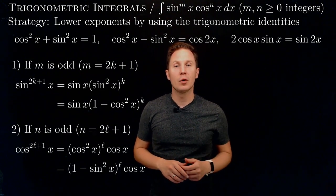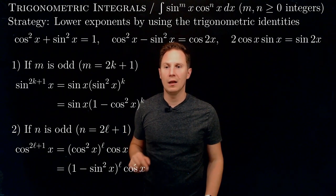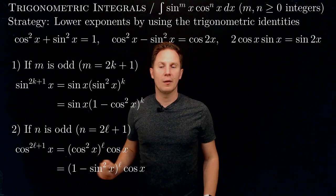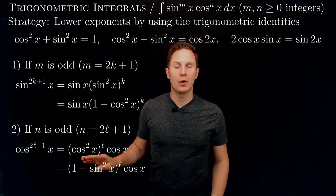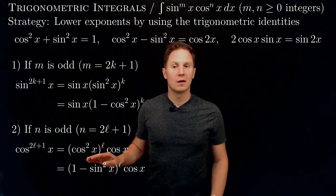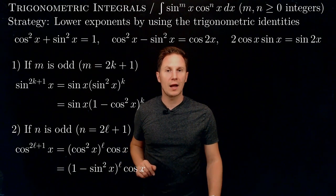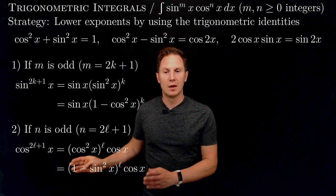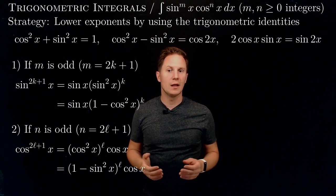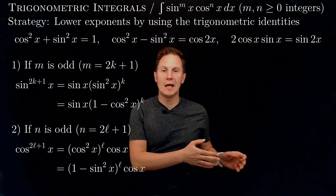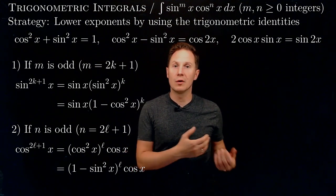Similarly, if it's the exponent of cos(x) that is an odd integer, so n is of the form 2l+1 with some integer l, then we write the n-th power of cos(x) by setting one cosine aside. The remaining even power of cos(x) is written as cos squared of x to the l-th power, which equals (1 minus sin squared x) to the l, times cos(x). Substituting back gives a polynomial in sin(x) times cos(x) dx, and u equals sin(x) turns that into a polynomial in u.